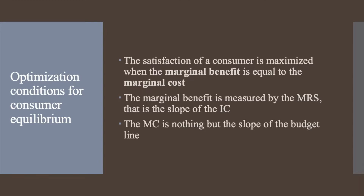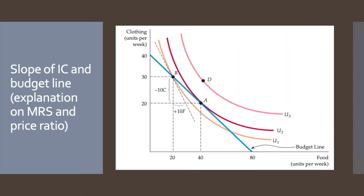The marginal benefit is measured by the MRS, which is the slope of the indifference curve. The marginal rate of substitution, or MRS, is the negative of the slope of the indifference curve, as seen in previous videos. The marginal cost is the slope of the budget line. At point A, the slope equals negative delta C divided by delta F, which is the MRS.